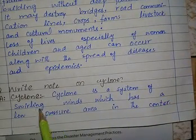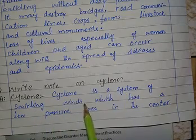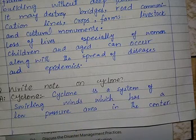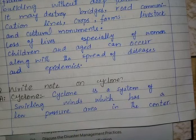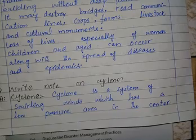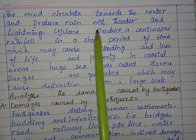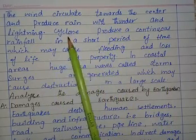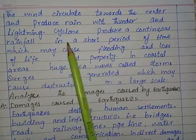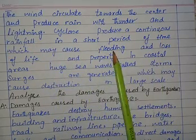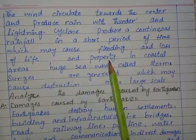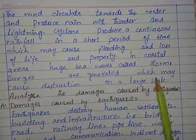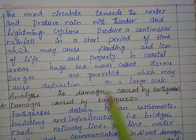Write a note on cyclone. Cyclone is a system of swirling wind which has a low pressure area in the center. The wind circulates towards the center and produces rain with thunder and lightning. Cyclone produces continuous rainfall in a short period of time which may cause flooding and loss of life and property.